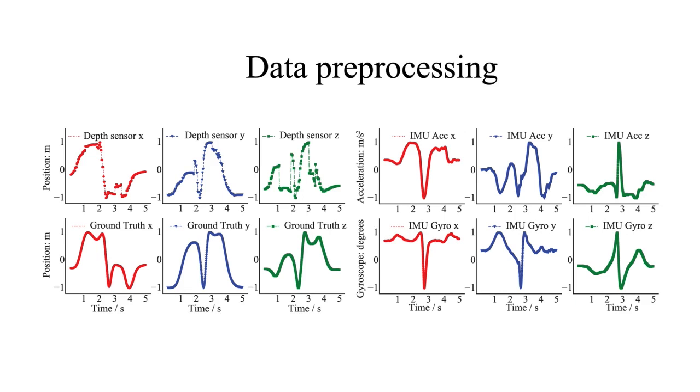After data collection, we preprocess the data. For the IMU data, we use a second order low-pass filter to remove its noise. And for the depth sensor, we also use a low-pass filter to remove its noise. Here is an example of one swing after the data cleaning.